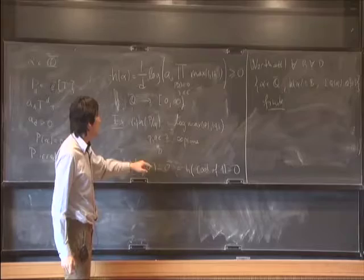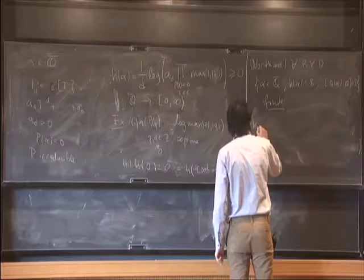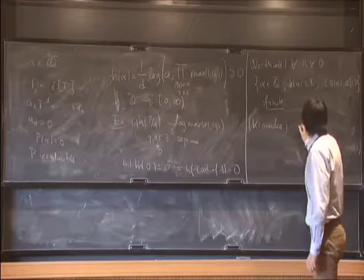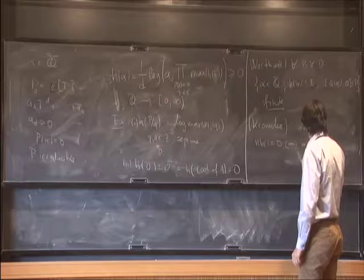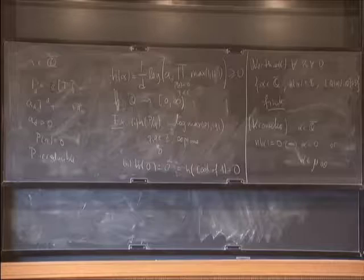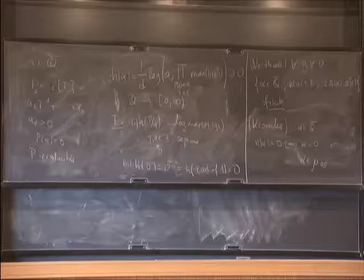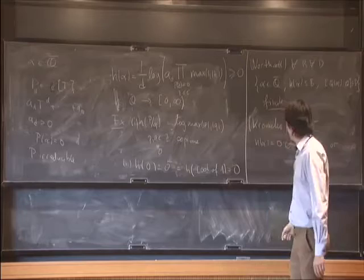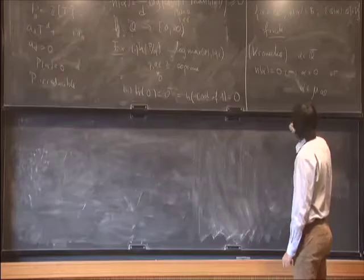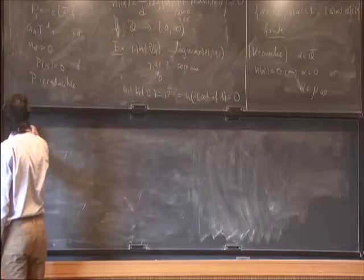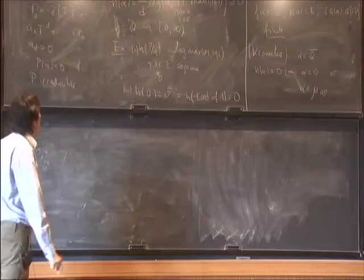Northcott's theorem can also be used to show a converse, sometimes attributed to Kronecker, which classifies the algebraic numbers of height 0. Alpha has height 0 if and only if alpha is 0 or a root of unity. One direction follows from the definition. For the other direction, if alpha has height 0 then all conjugates lie on the unit circle, the leading coefficient is 1, and you'll find that the height of alpha squared is also 0. So all powers of alpha have height 0.